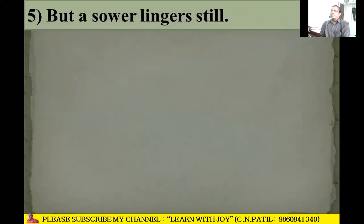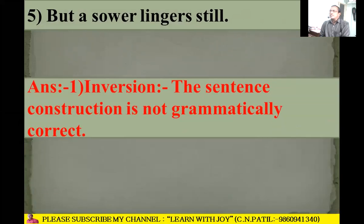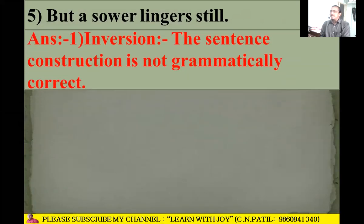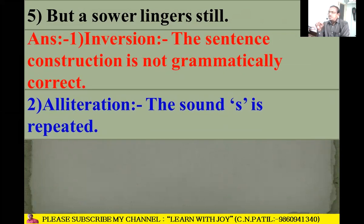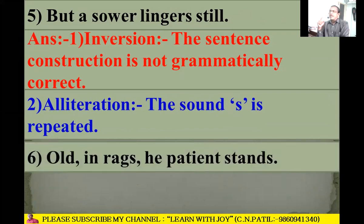Next line: 'But a sore lingers still.' Inversion is there because the sentence construction is not in grammatical order — it is used for poetic effect. Alliteration is also there because the 's' sound is repeated: 's' in 'sore' and 's' in 'still.'